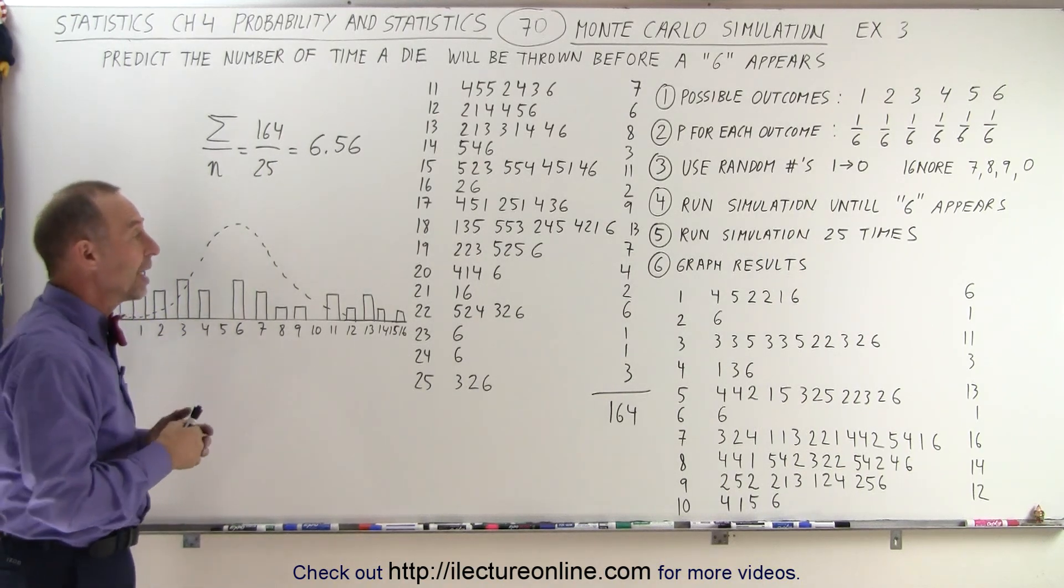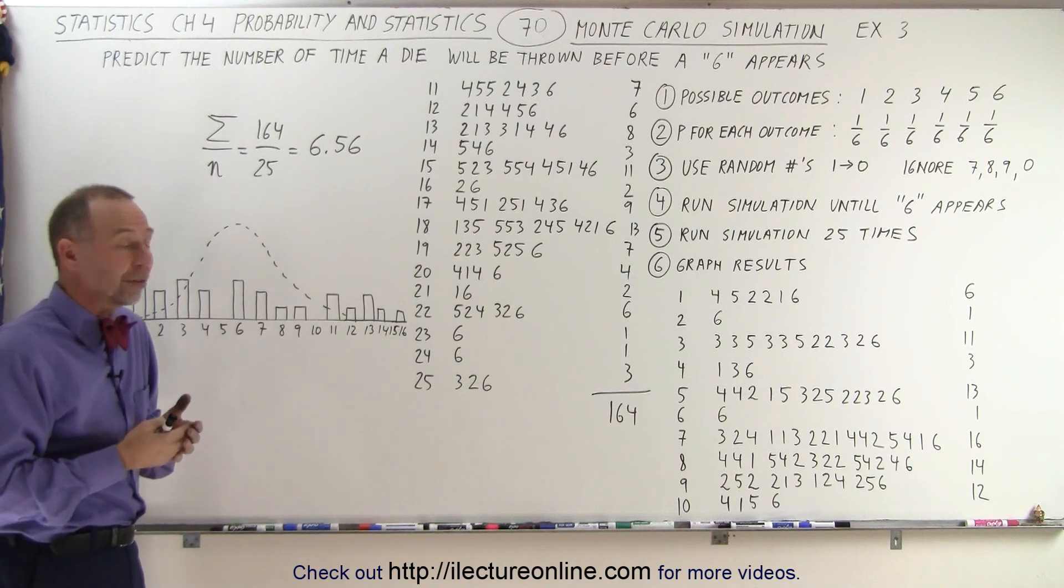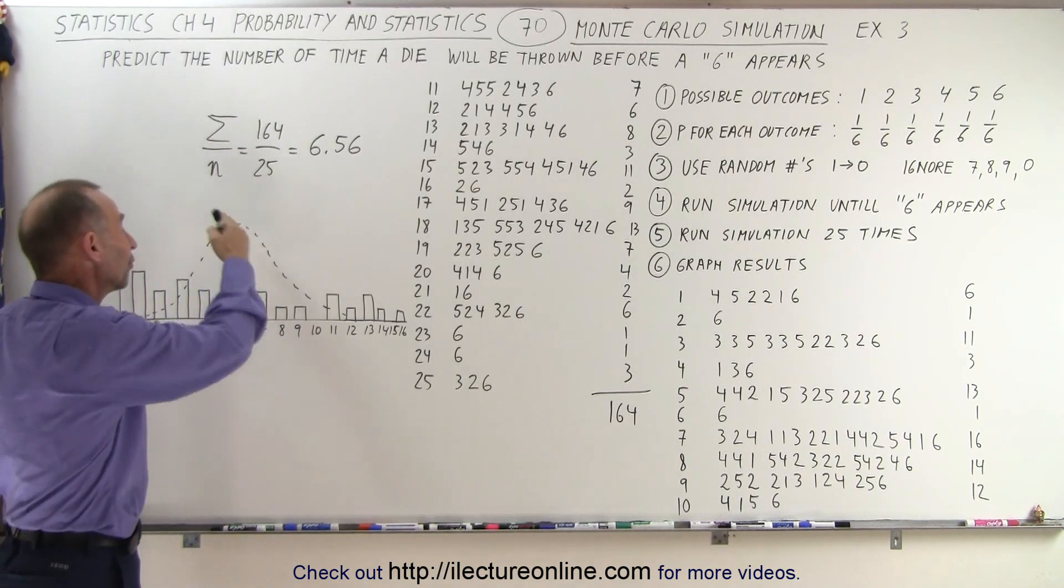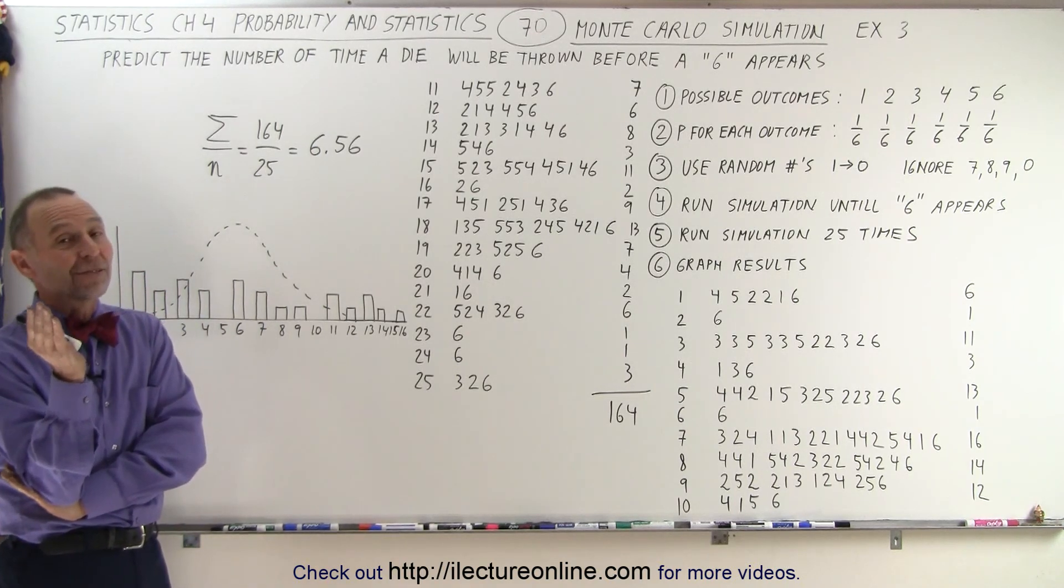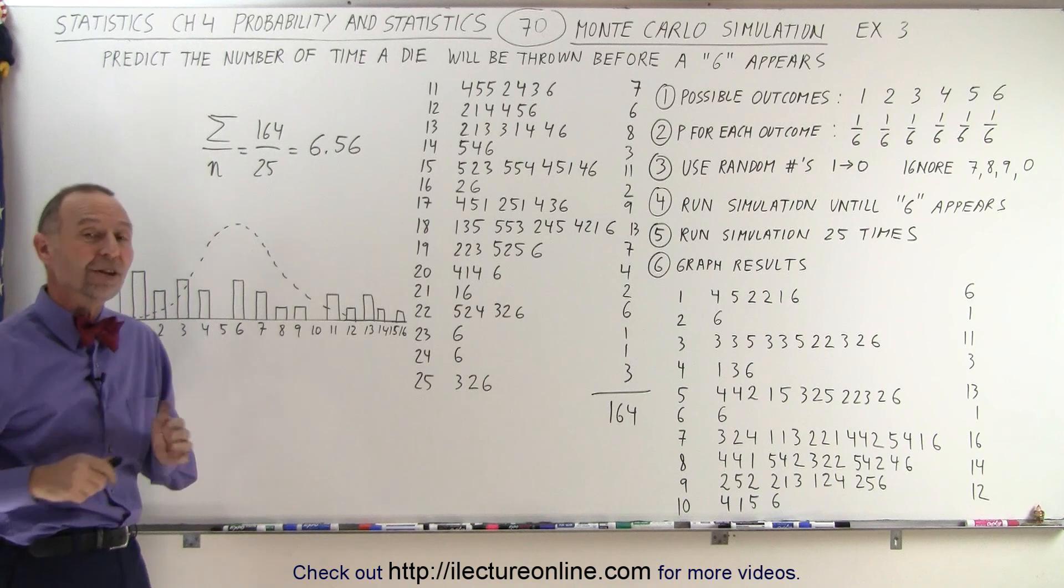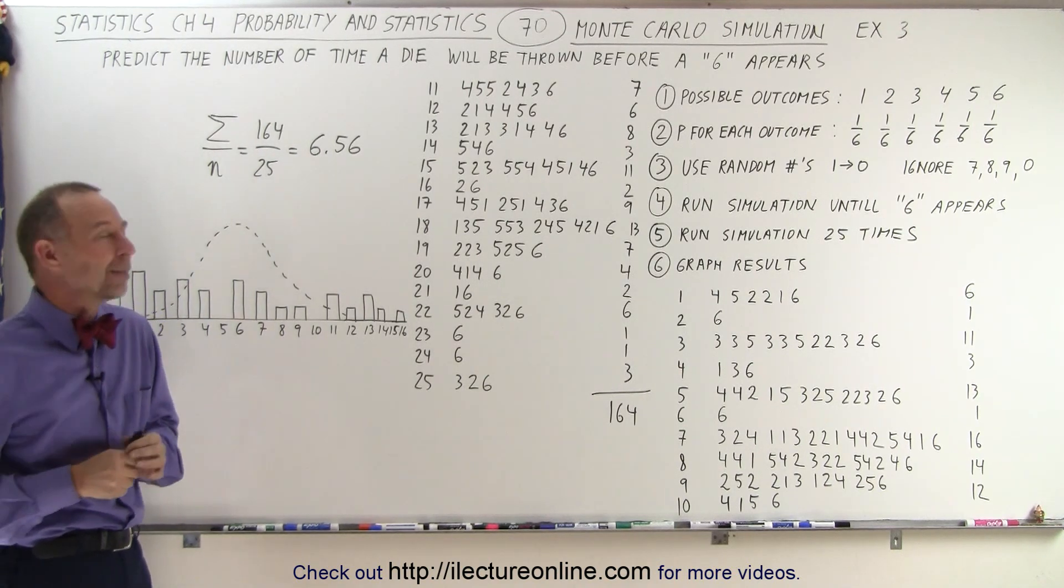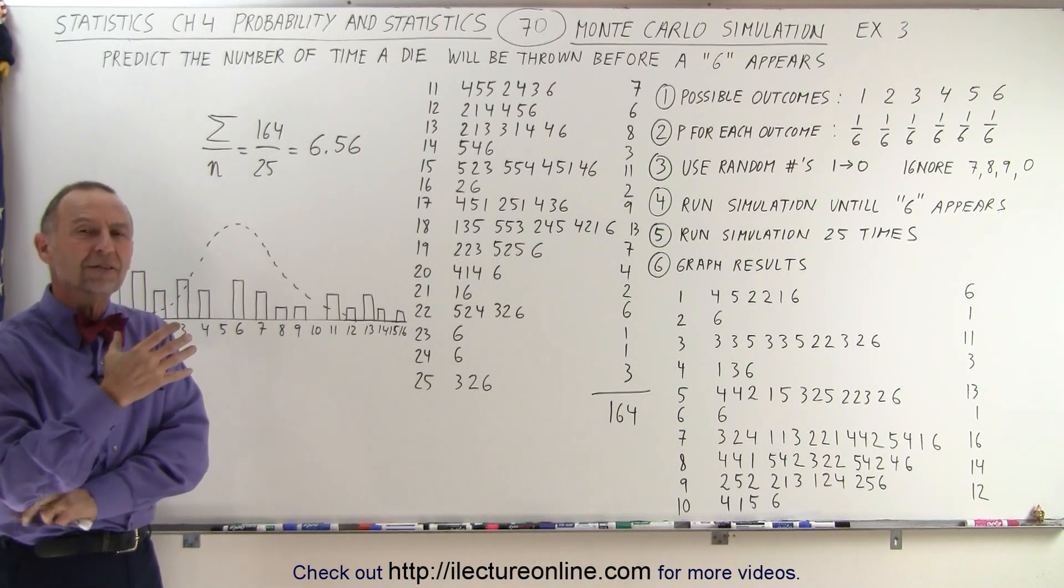First of all, I only ran the simulation 25 times. I probably should have run the simulation a thousand times, and then I probably would have had much more of a bell curve like that. Secondly, I used dice instead of an honest random number generator, and it could be that the dice, which came from some cheap games that I had at home, might not have been good dice, and so therefore the simulation would not be a proper simulation.